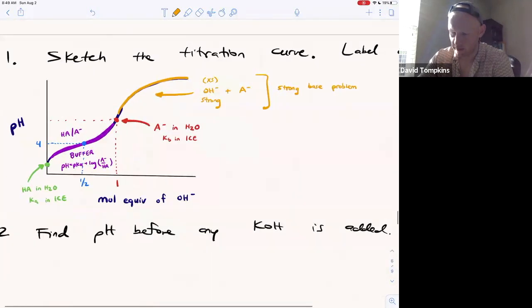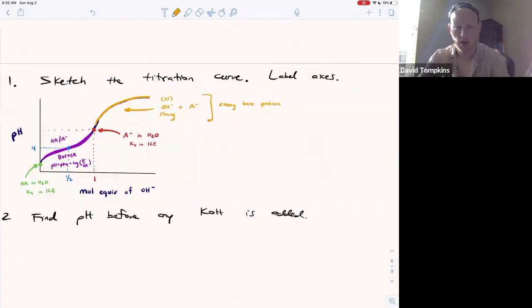These are the four different regions of the titration curve. You should be able to draw these curves and accurately predict some of the pH values on the y-axis. As we do the problems in subsequent videos, I'll keep labeling this so we can understand where we're at.